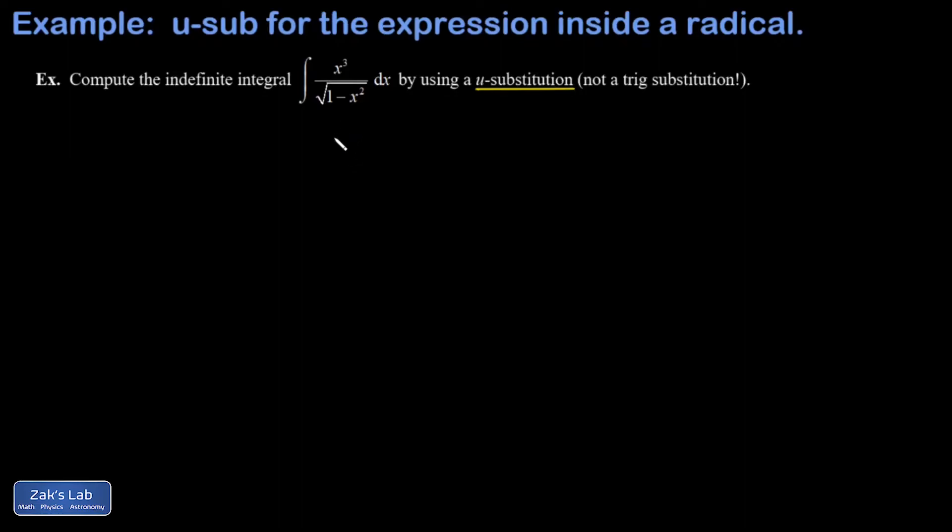And this is the flavor of u-substitution where accounting for the chain rule backwards is not simple, and really what I'm doing is just trying to simplify the interior of a square root and then hoping for the best. So if I do a u-sub on an integral where it's not obvious what's going on with the chain rule backwards and there's a square root in it, I'm always going to make that u equal to the interior of the square root. So I have let u equal 1 minus x squared.